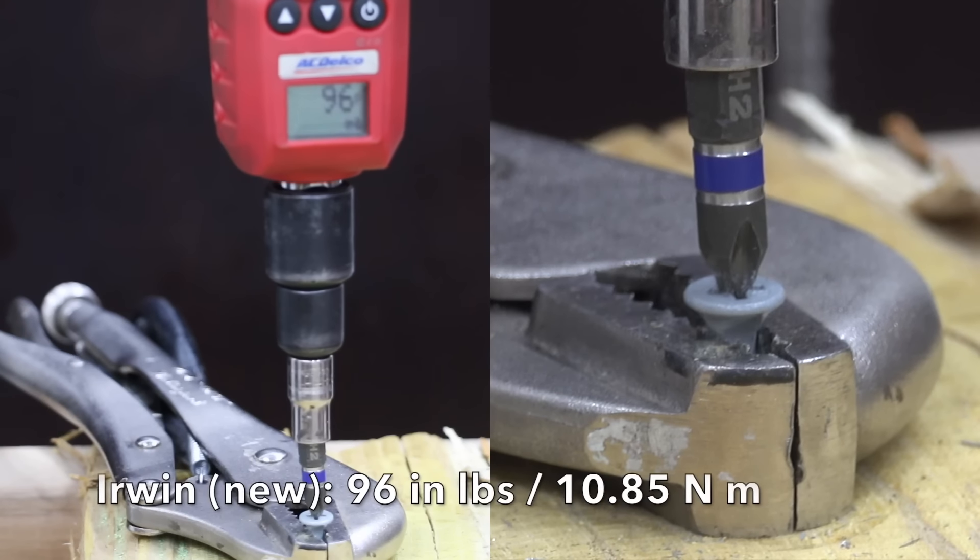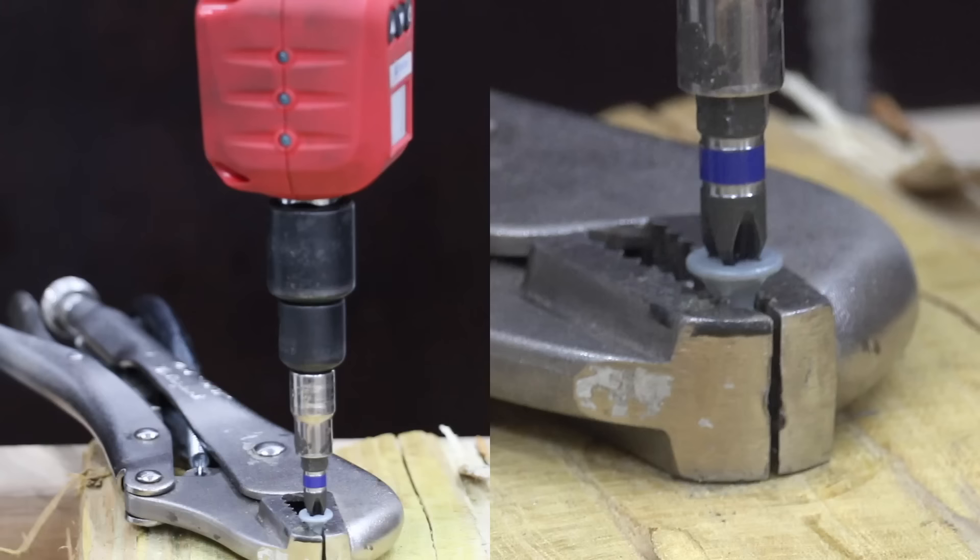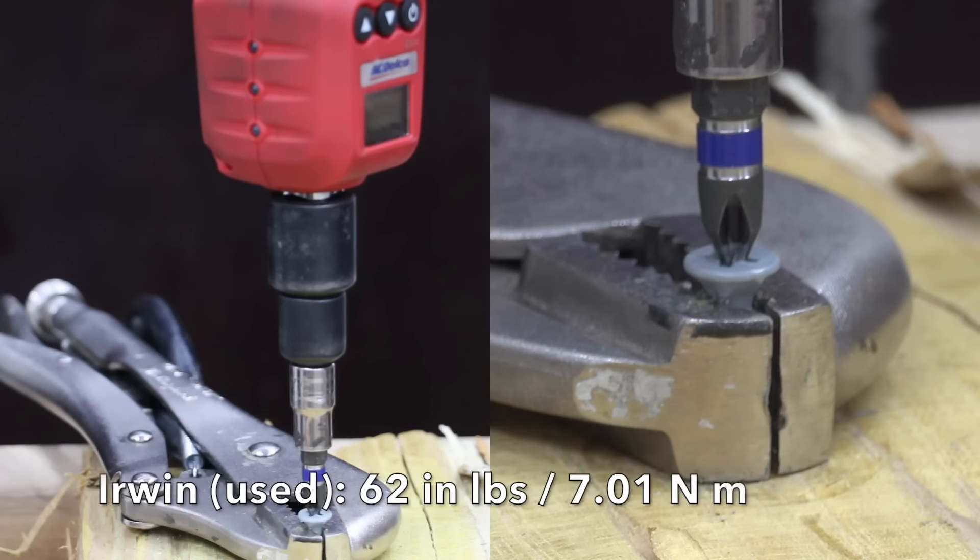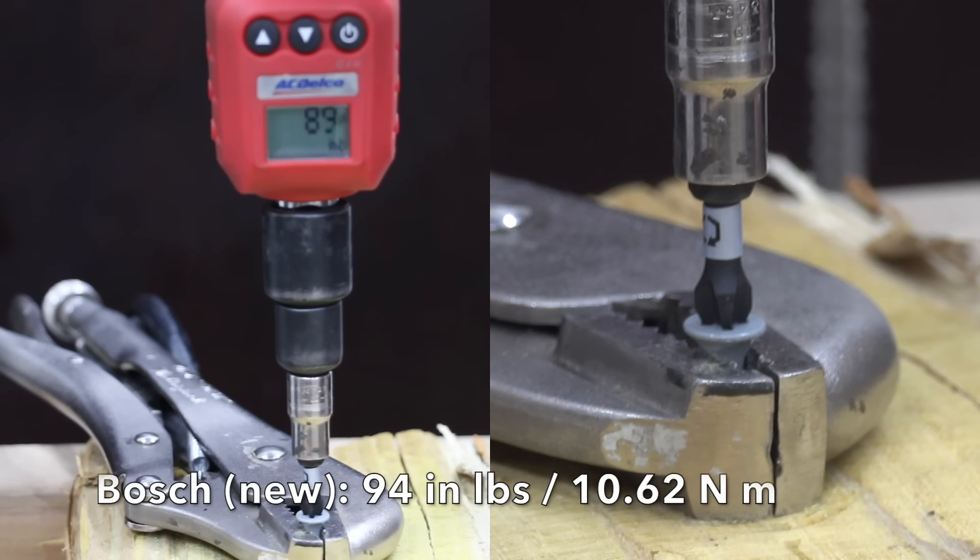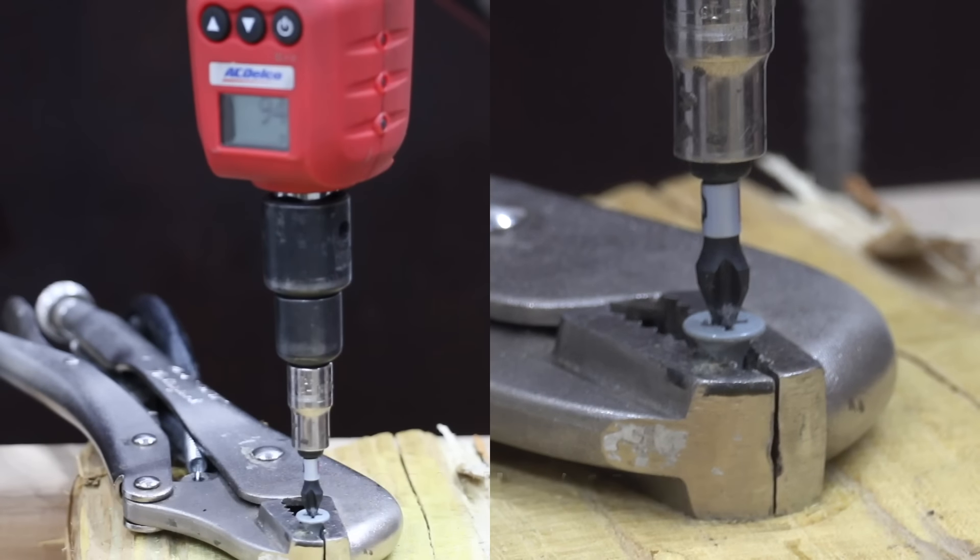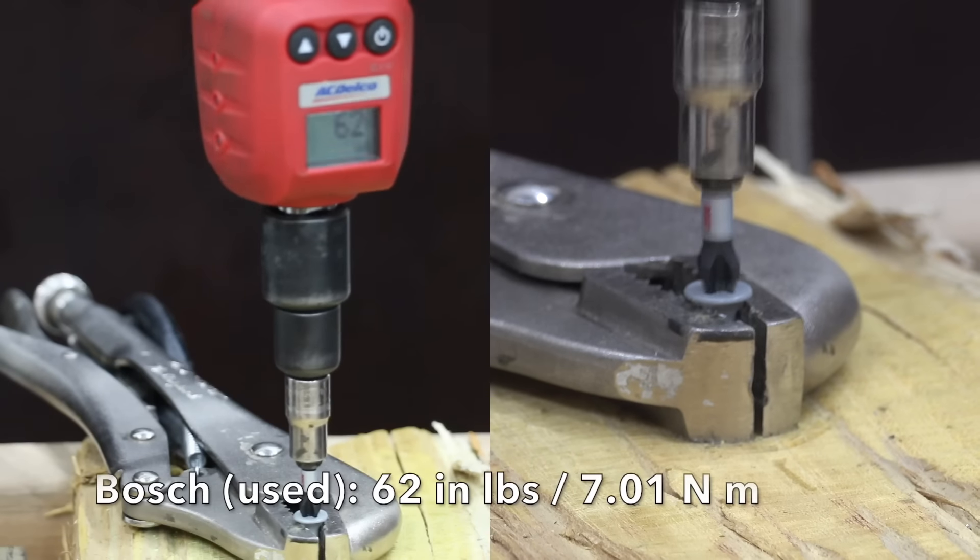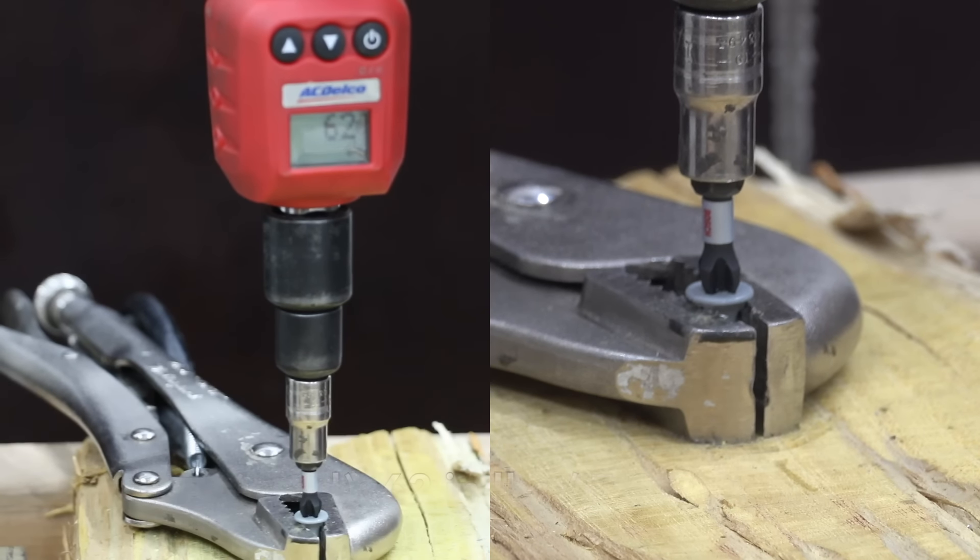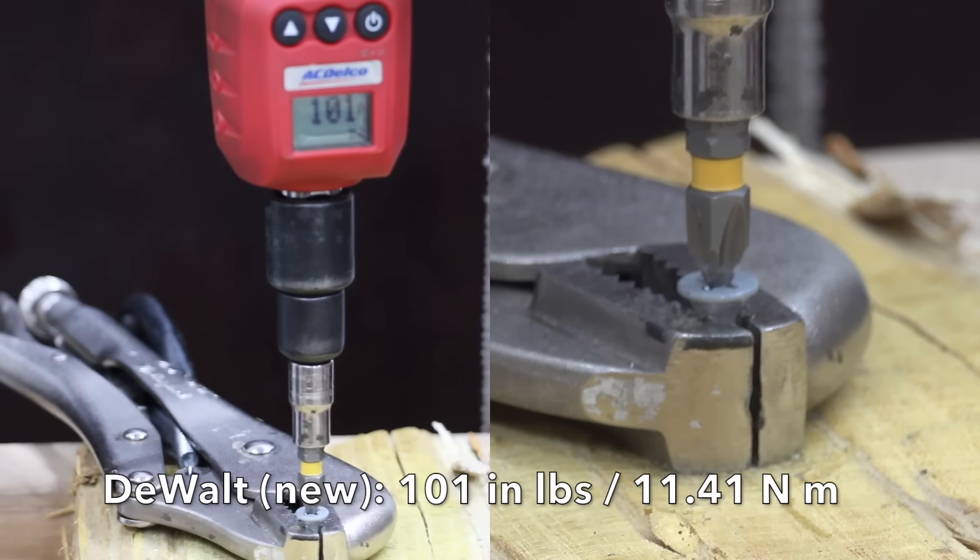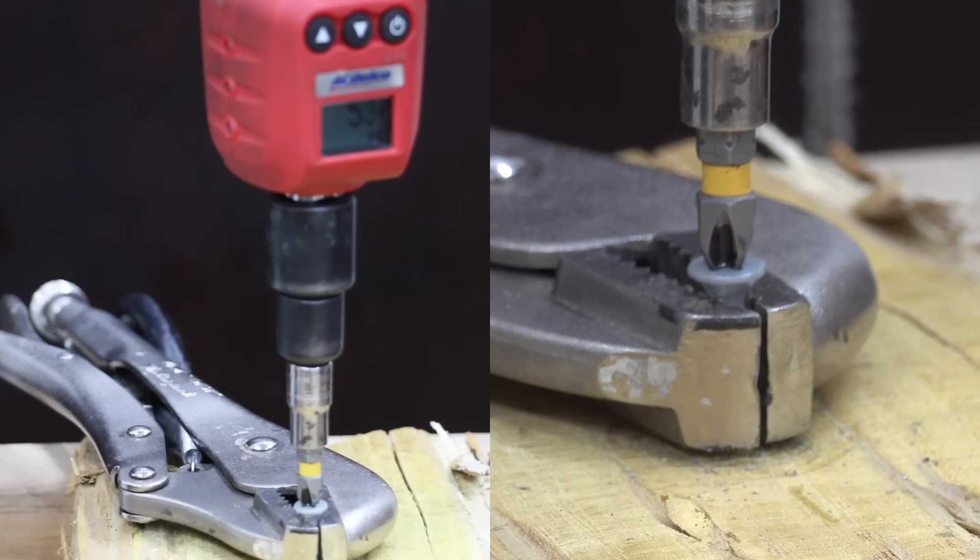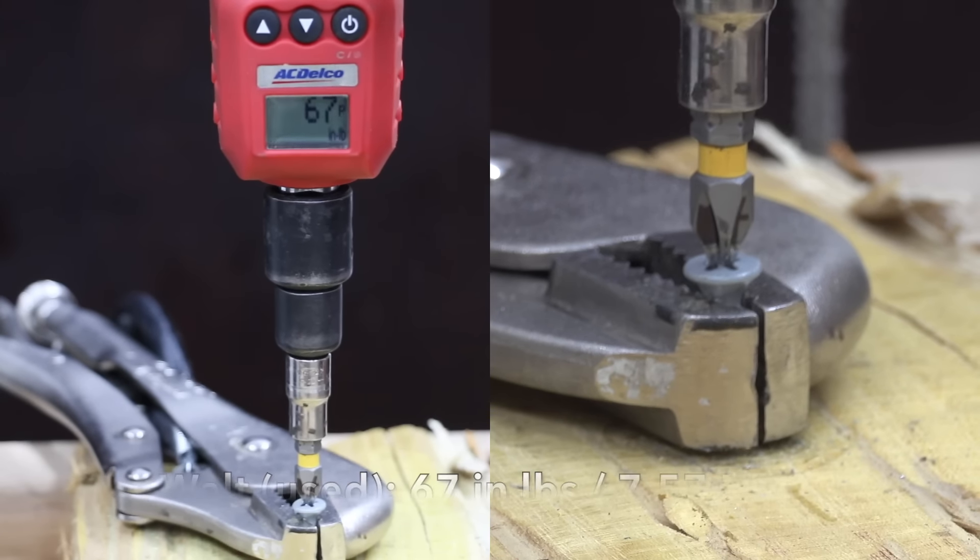The new Irwin lost grip at 96 inch pounds. The used Irwin was very close to the Craftsman at 62. The new Bosch slipped out of position at 94. The used driver bit did the same as the Irwin at 62. The new DeWalt lost traction at 101 inch pounds. The used DeWalt did much better than average at 67 inch pounds.